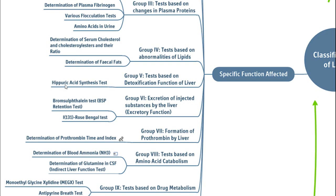Group 5 — based on detoxification function of liver — hippuric acid synthesis test. Group 6 — excretion of injected substances by the liver (excretory function) — bromosulphthalein test and I-131 rose bengal test. These use exogenous compounds only, because endogenous substances may be affected by dietary intake or other simultaneous metabolic conflicts. Group 7 — formation of prothrombin by liver — determination of prothrombin time and index.